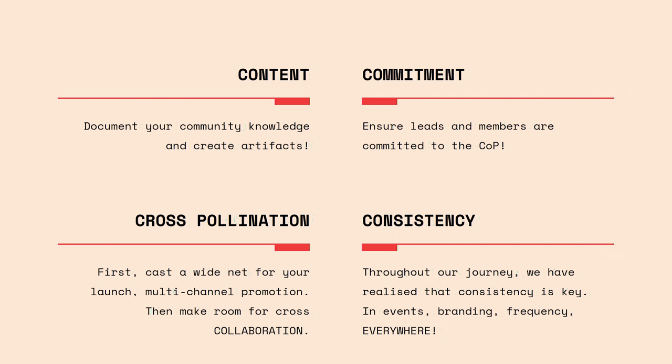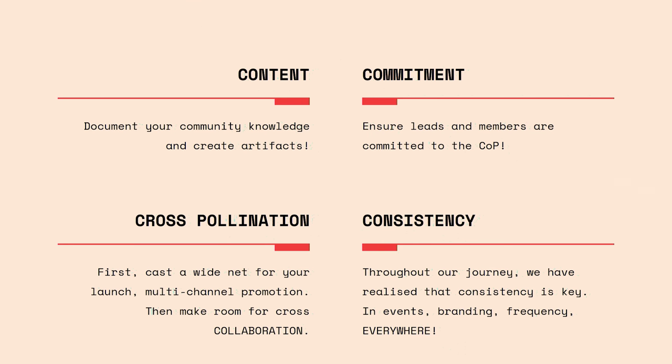Consistency — throughout our journey we've realized consistency is key. In events, in room bookings: if you have your workshop every second Thursday of the month in the same room, people show up automatically. It just becomes a reflex. You don't have to check what room, what time, whether it's on this month or not. With marketing, everyone knows our brand — everyone knows when they receive an email or notification it's from us. We enforce that with our brand repo; everyone needs to use it, and if you want a new asset you can't make yourself, let us know and we'll design it. Commitment: we want to ensure the people in the room are the right people — there because they care, learn, and share. It's not mandatory. It's a passion project.